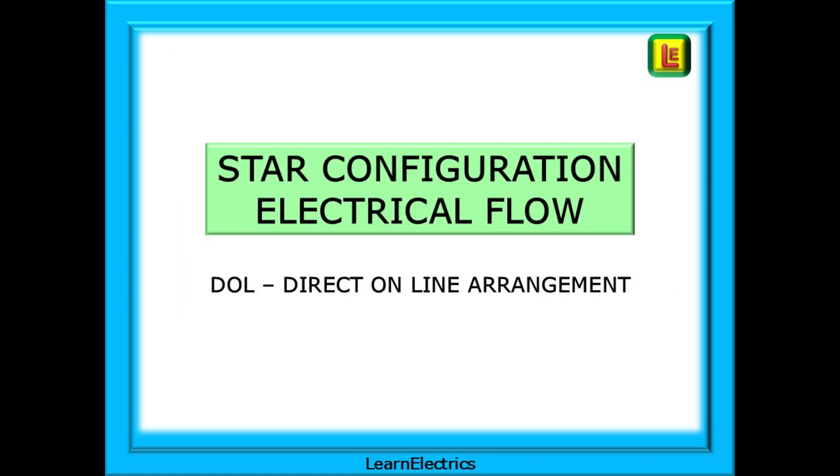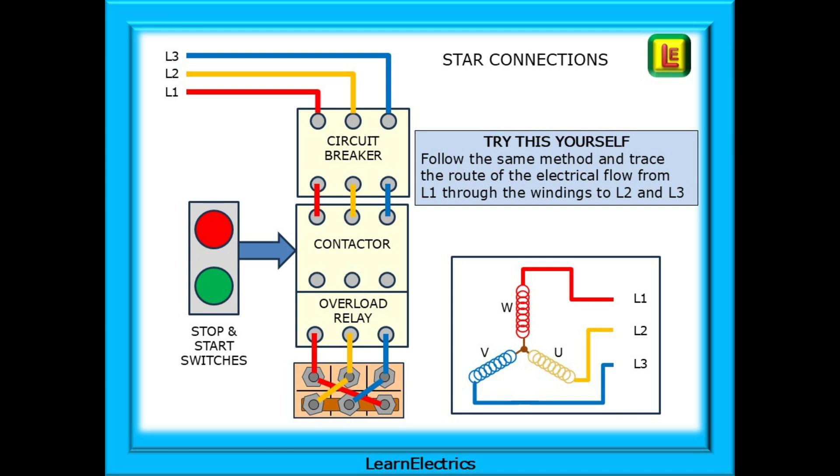How will a star configuration differ? This is still a direct online or DOL arrangement. This is the same format for the circuit breaker, contactor, and overload relay. What will change is the layout of the brass strips. This time they connect U1 to V1 to W1. All the 1s are connected, and the power conductors are on the number 2 terminals as shown. Try to follow this electrical route yourself. Follow the same method and trace the route of the electrical flow from L1 through the windings to L2, and then follow the route from L1 to L3.